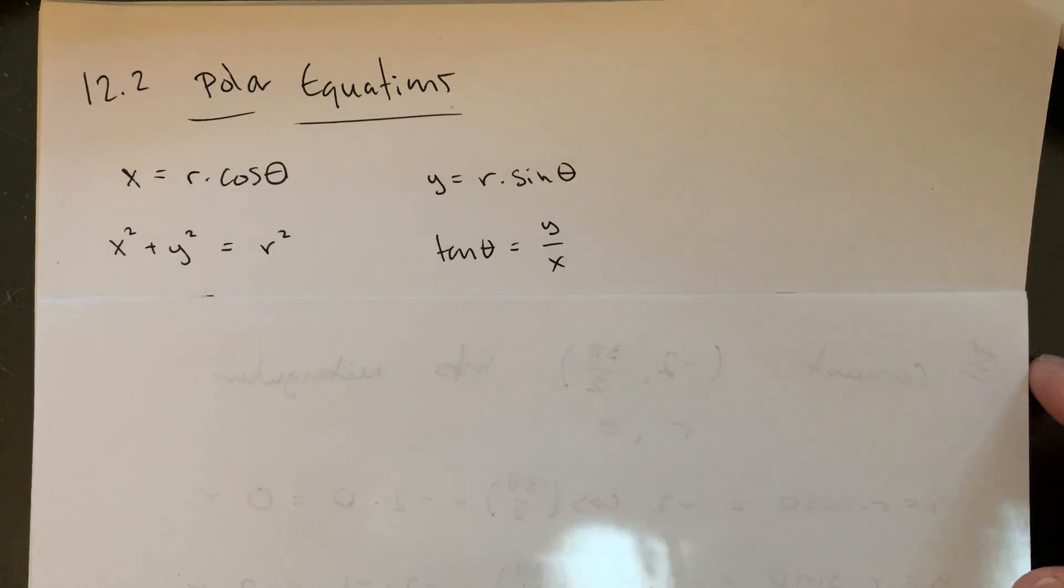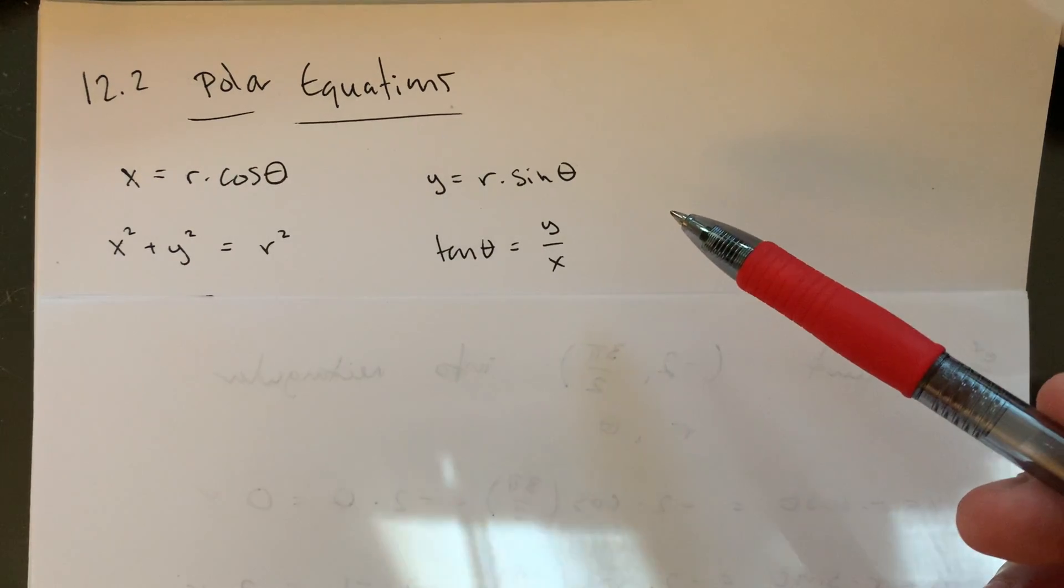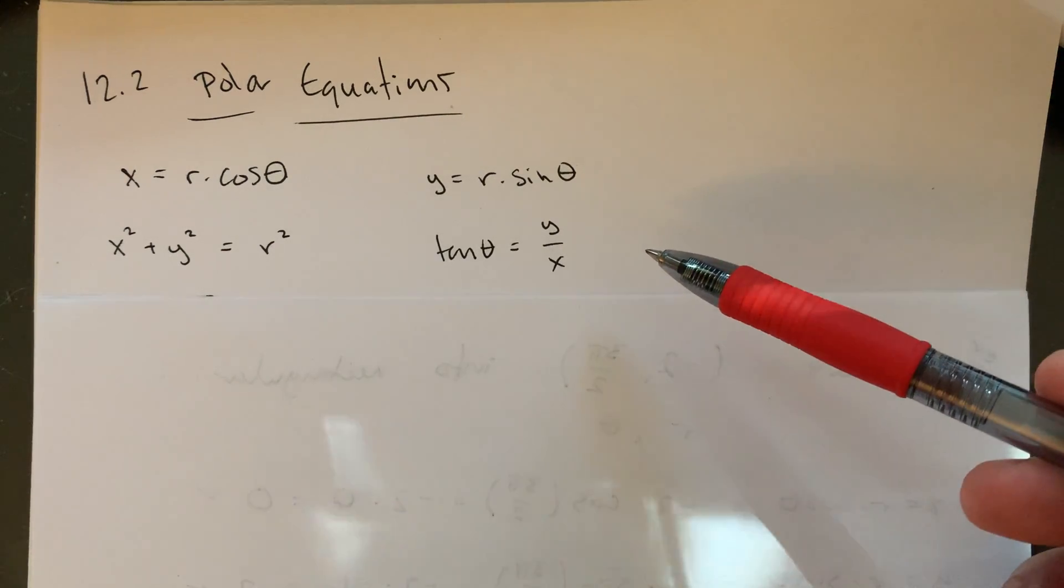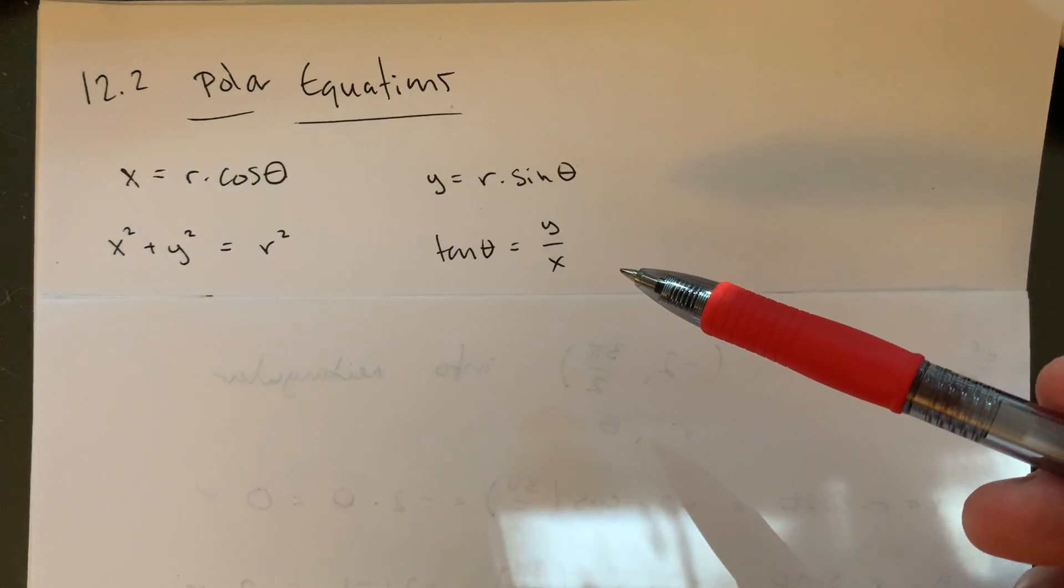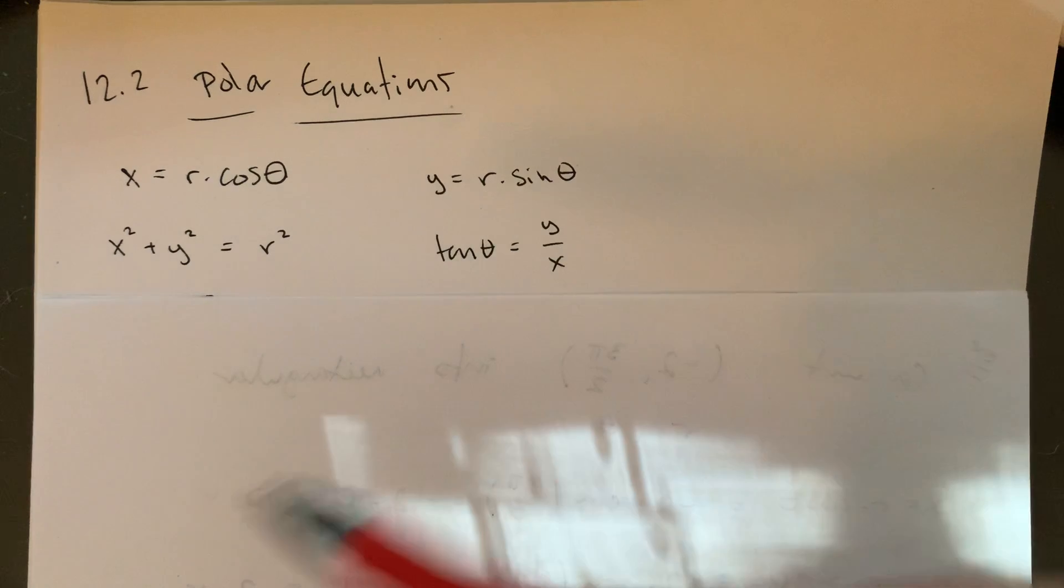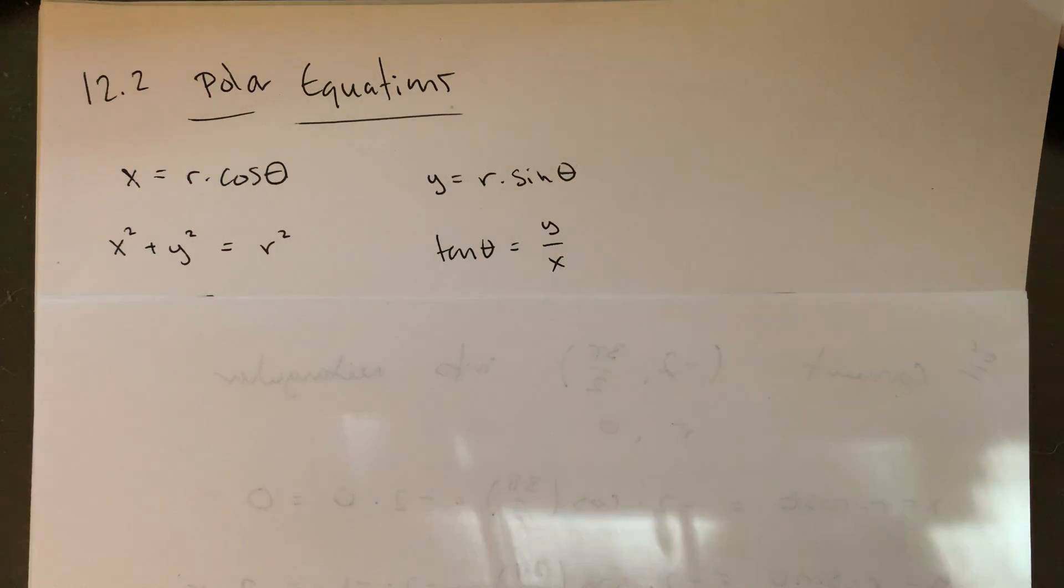What I want to use is our kind of four main formulas. Here are kind of four conversion formulas that we would use for going between rectangular and polar coordinates as like points.